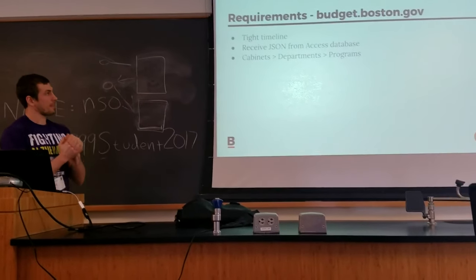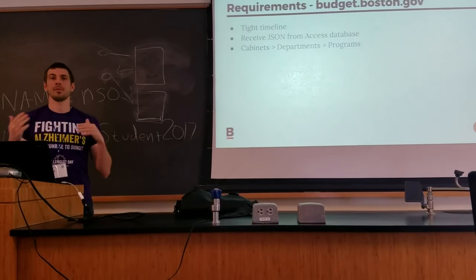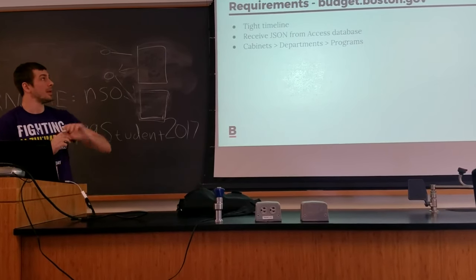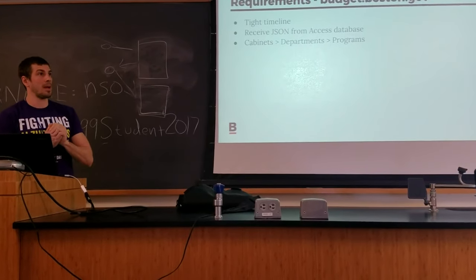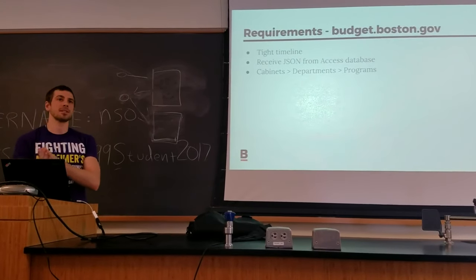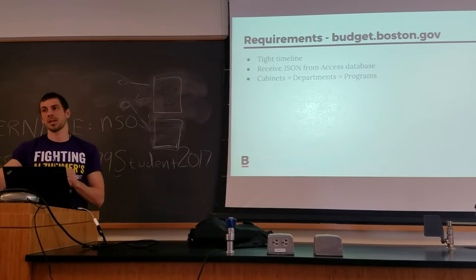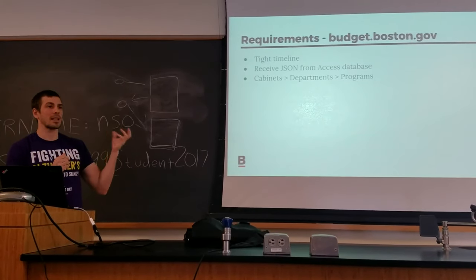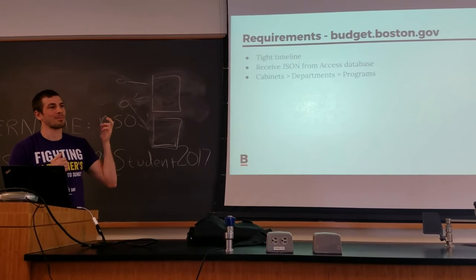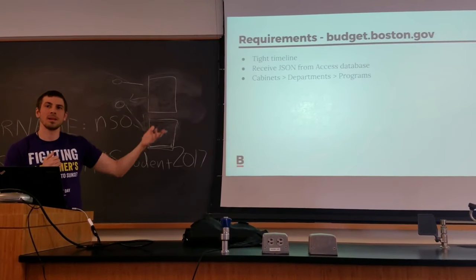Now I'm hopping into what we did with the Boston project — this is going to get a little technical. Basically, this project came up when I was working with Boston.gov, and the idea was they had to display their budget information to the public: what they're spending their money on, what they're budgeting for in the future, the last few fiscal years, and projections for the next year. We had a really tight timeline, and we're using Drupal 7 over at Boston. We figured what we're really trying to do is pull information from an Access database into JSON, consume it, and display it in some really nice ways.